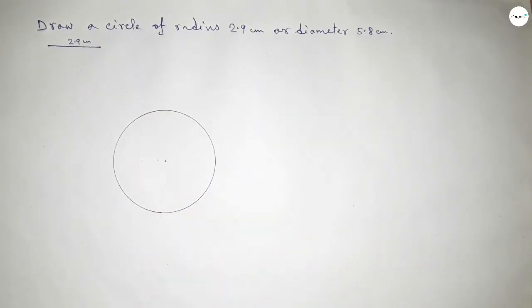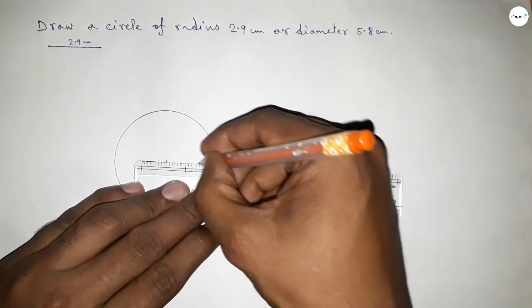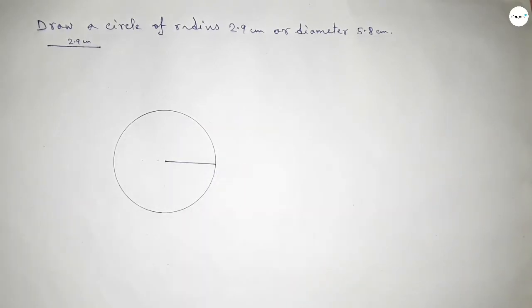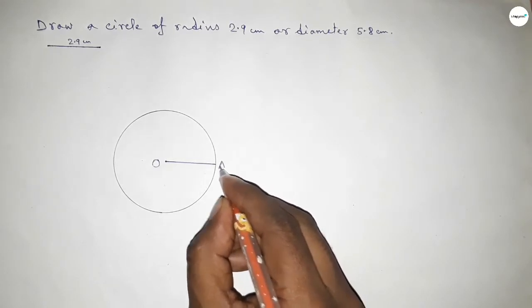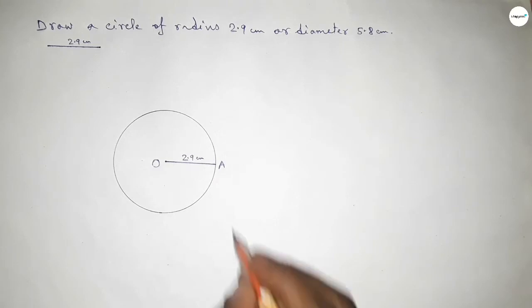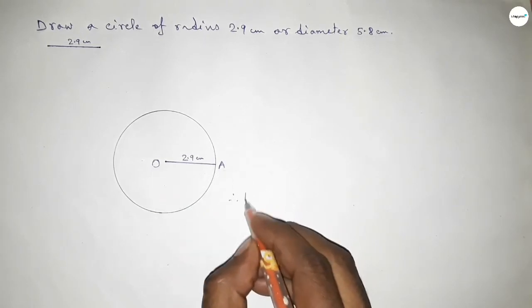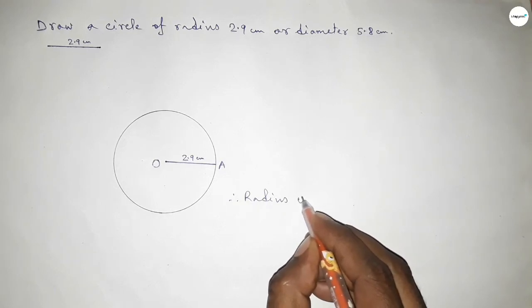Now joining this one. So taking here the center O and here a point A. So OA equal to 2.9 centimeter. Therefore radius OA equal to 2.9 centimeter.